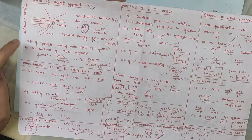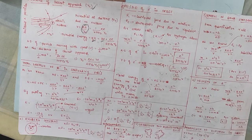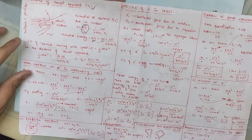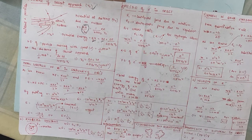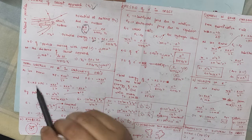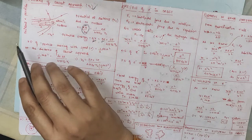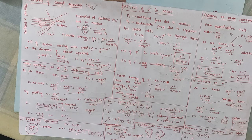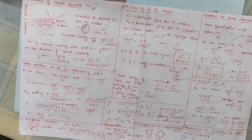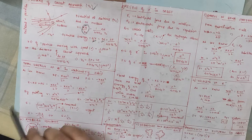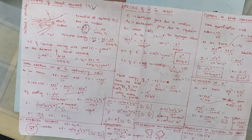Now think about this. Initially when I throw the alpha particle with some velocity, its kinetic energy is ½mv². By conservation of energy: the initial kinetic energy equals the potential energy at the closest approach, because it was situated at infinity initially. At the closest approach, the particle has stopped, so kinetic energy is zero and all energy is potential energy.